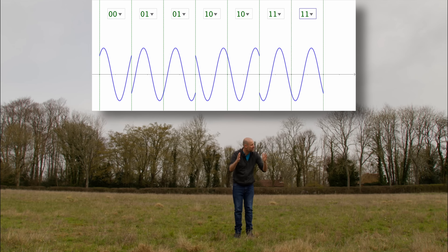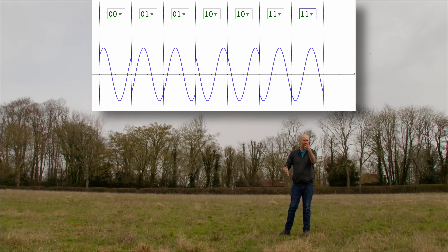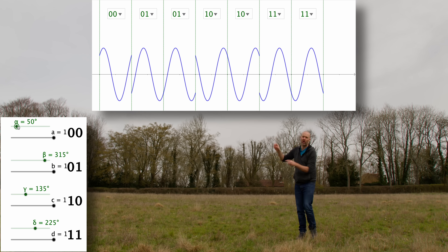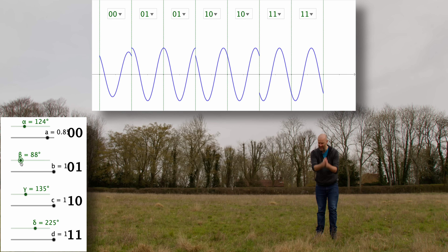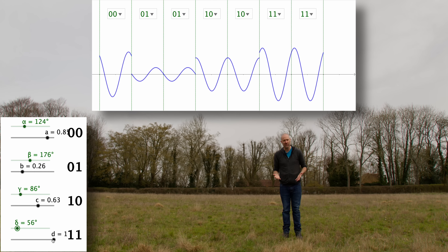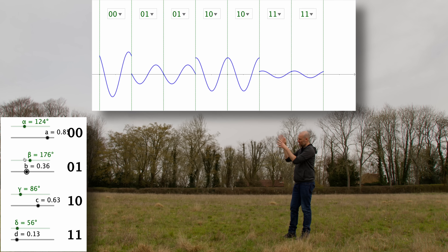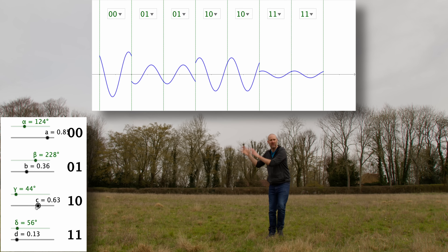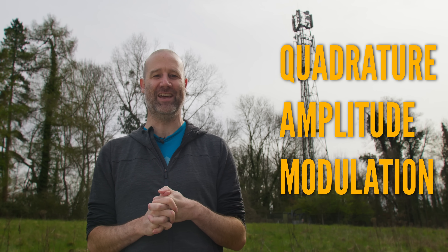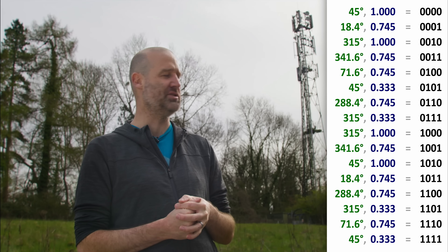Now we've got more Gs and we want to send more data, so we need more different phase offsets. We could split each wavelength into more offsets, but what if we brought back amplitude too? For each code word — each string of ones and zeros we want to send — we can assign different amounts of phase change and amplitude change. There's surely a clever way to pick these values to be more efficient; maybe we can go up to 16. And there is — it's called QAM: quadrature amplitude modulation. Here's 16-QAM with four-bit code words.